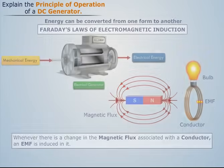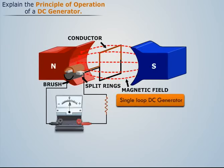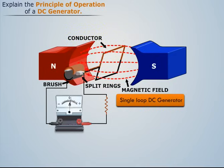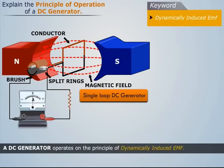Therefore, the two basic essential requirements of an electrical generator are the magnetic field and the conductor which can move so as to cut the magnetic flux. Thus we can say that a DC generator operates on the principle of dynamically induced EMF.